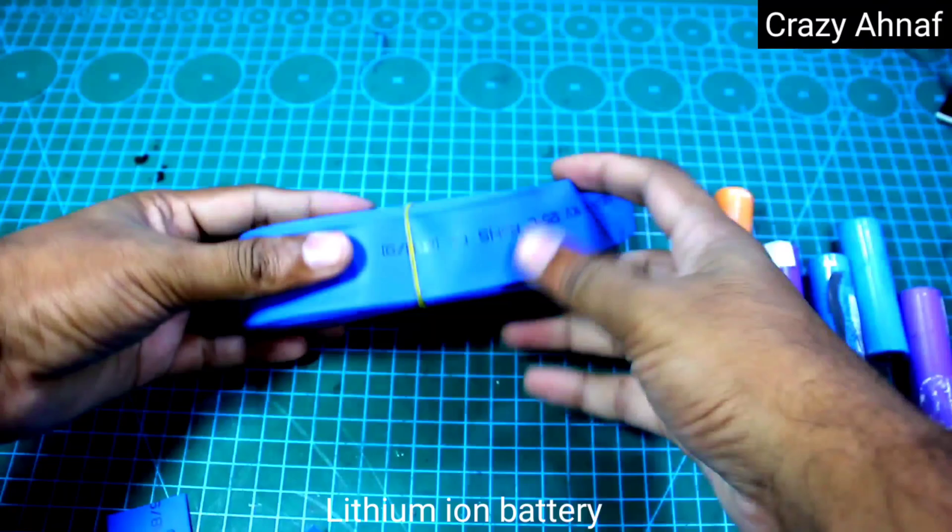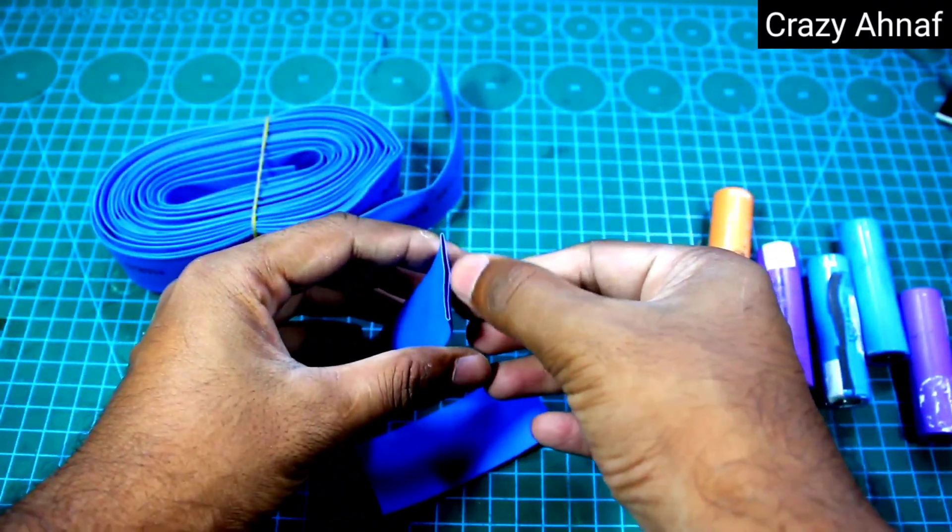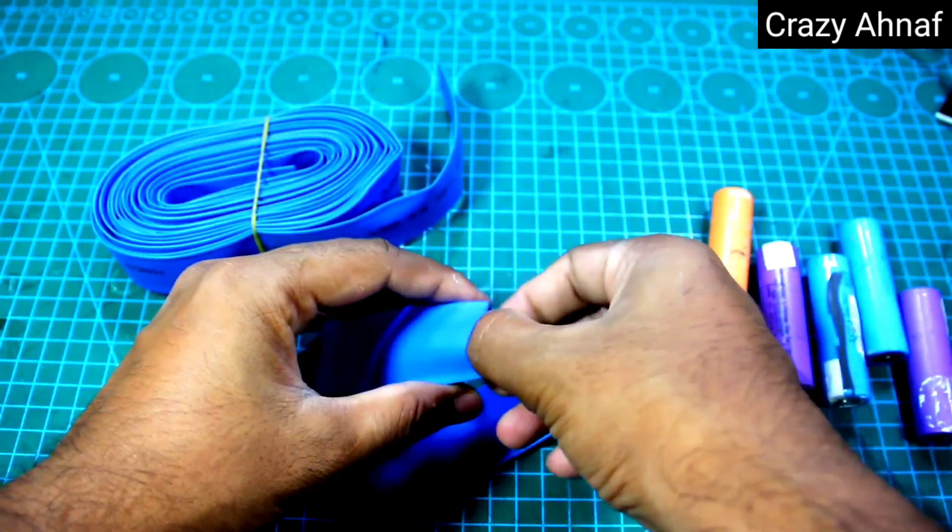I will take nine lithium batteries to make a power battery. I will use heatsink tube over the batteries for an extra layer of safety.